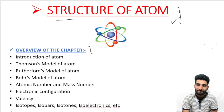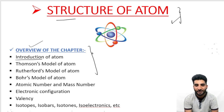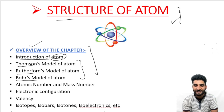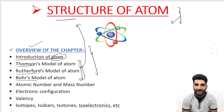I will start this lecture with an overview of the chapter. Our first topic will be the introduction of the atom — we will briefly discuss what an atom is. After that, there are models of the atom: Thomson's model, Rutherford's model, and Bohr's model. These three models explain the structure of the atom. We will discuss all three of these models.